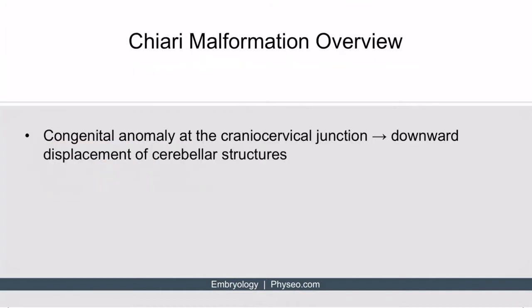Chiari malformations are congenital conditions defined by anatomic anomalies of the cranio-cervical junction, and this leads to downward displacement of cerebellar structures. There are actually four different types, but only the first two are important for board examination purposes. So let's first focus on type one.